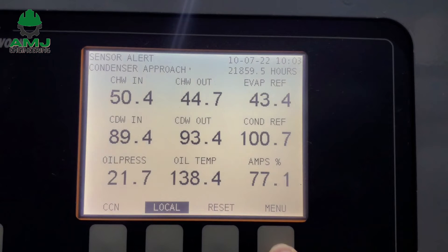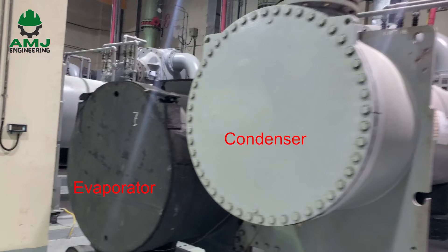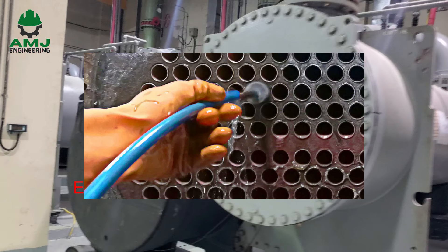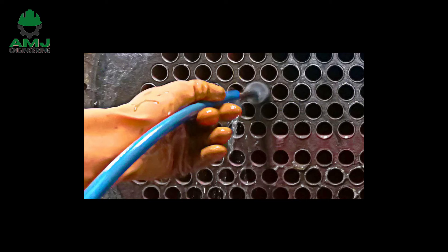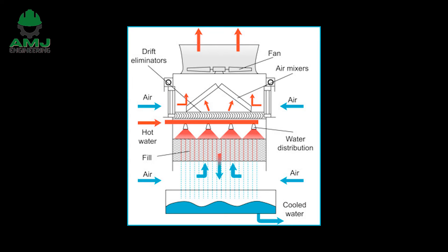What does high approach mean? It means the chiller condenser has gotten dirty and requires cleaning. The condenser approach raises much quicker than the chiller evaporator approach because it is an open piping system, so a lot of dirt gets inside from the cooling tower. Thus, it is very common that the chiller condenser approach rises above 7 degrees Fahrenheit, causing poor chiller performance and high power consumption issues.